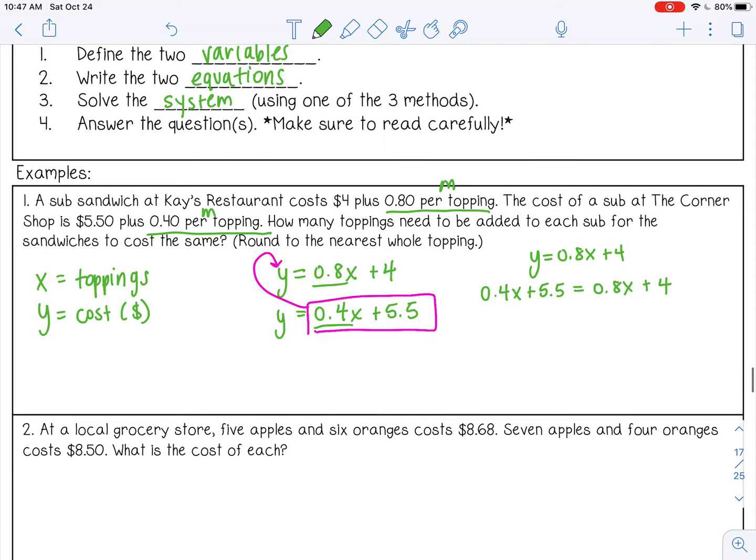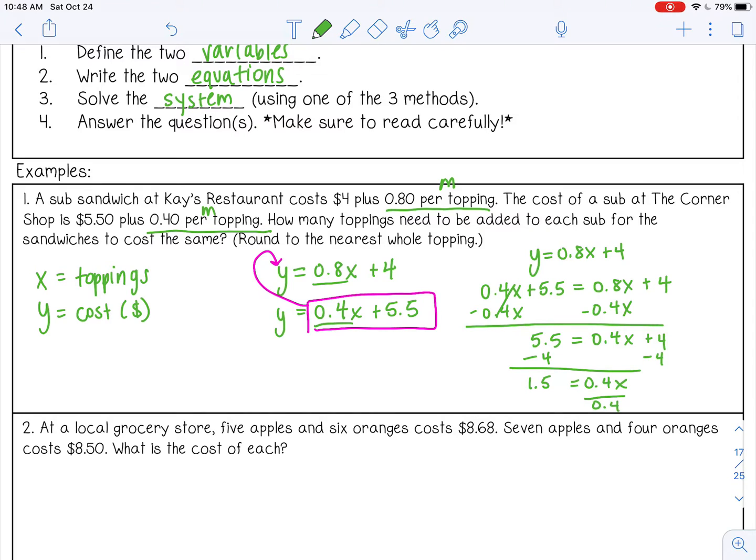Okay, so let's combine like terms. We don't have any like terms on the same side of the equal sign, so I need to move them to the other side. I'm going to move this one first. So that would be 0.4x. I'm isolating x, so let me move this four. And then divide. So 1.5 divided by 0.4 is 3.75.